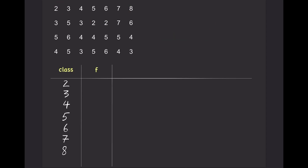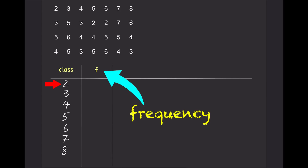Now we count how many data points fall into each class. For the first class, 2, there are 3 data points. And for the second class, 3, there are 5 data points.